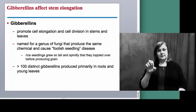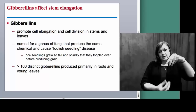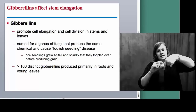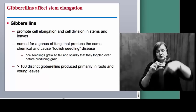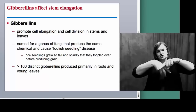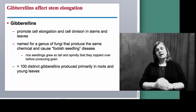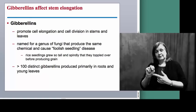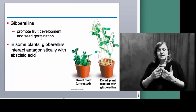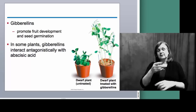Gibberellins are another type of hormone, working on cell elongation and cell division. Remember in plants — particularly in the roots with the zone of elongation — cells divide very quickly, then go into a phase where they simply elongate rather than become more numerous. Gibberellins work on cell elongation and division in stems and leaves, and also help promote fruit development and seed germination. Gibberellins are often applied to agricultural crops to help develop better fruits.